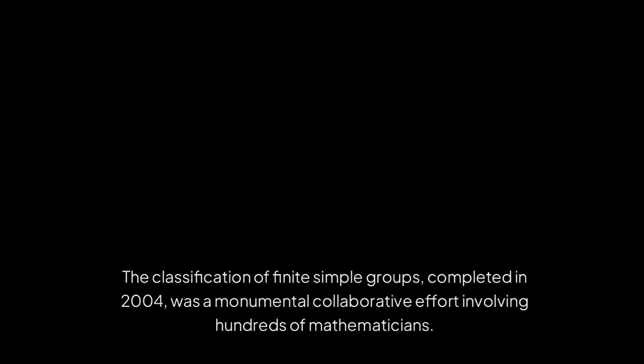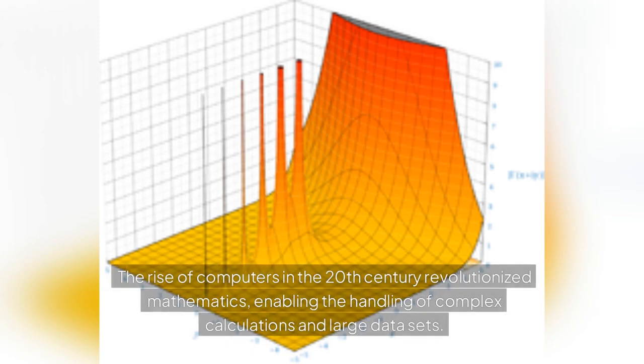The classification of finite simple groups, completed in 2004, was a monumental collaborative effort involving hundreds of mathematicians. The rise of computers in the 20th century revolutionized mathematics, enabling the handling of complex calculations and large data sets.